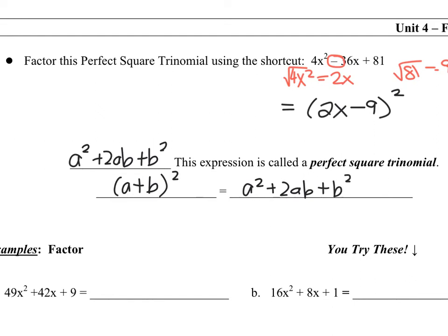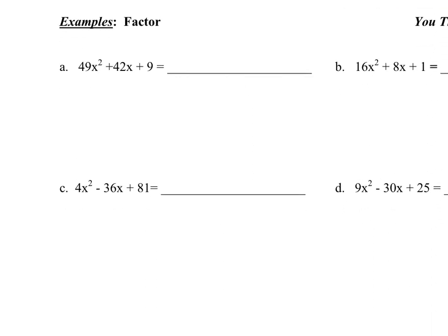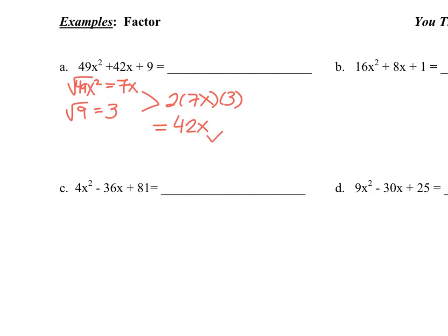Let's try four examples; I'll do a and c, then you pause for b and d. For example a: the outsides 49x² and 9 are perfect squares. Square root of 49x² is 7x; square root of 9 is 3. Check: 2 times 7x times 3 is 42x — that matches the middle term. So I put 7x and 3 in a bracket with addition, squared: (7x + 3)².